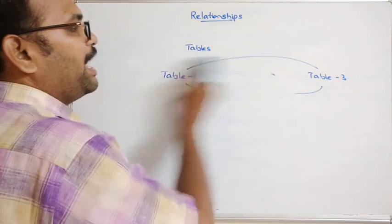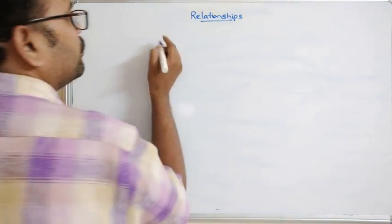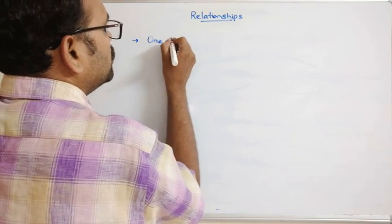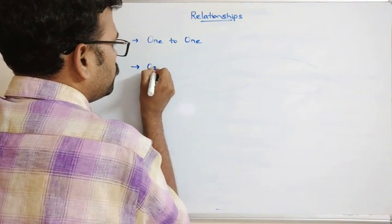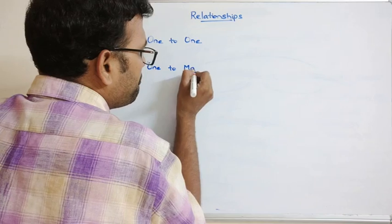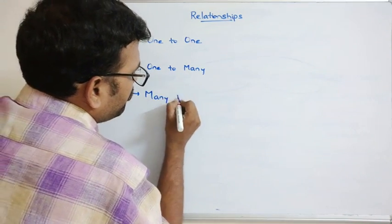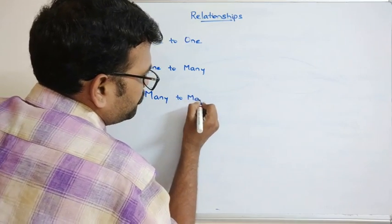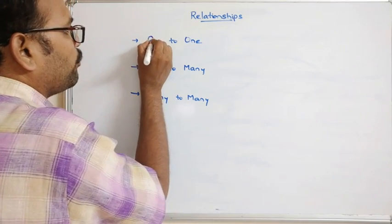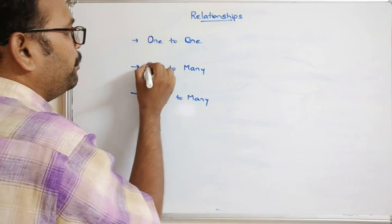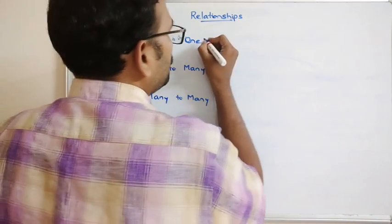Now let's see the different types of relationships available in DBMS. There are three types: one-to-one relationship, one-to-many relationship, and many-to-many relationship.